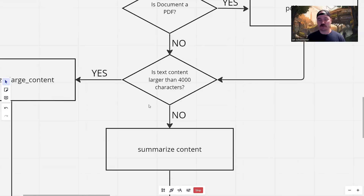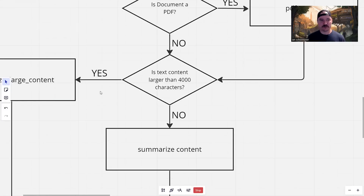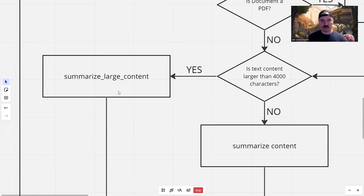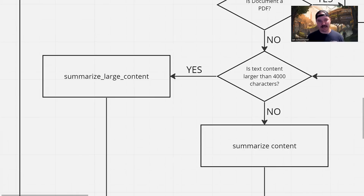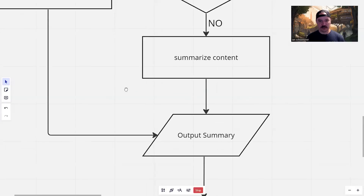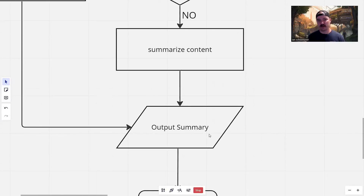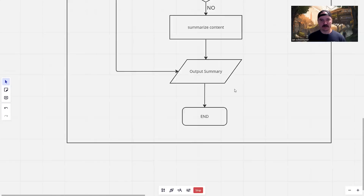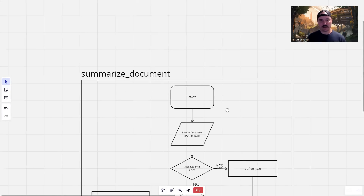However, if it's larger than 4,000 characters, we pass it to the summarize_large_content function. That function breaks up the text into smaller sections of 4,000 characters or less, summarizes each of those, combines all those summaries, summarizes the combination one last time, and passes it back. We then output the summary to the console, and that is the end of our summarize_document function.